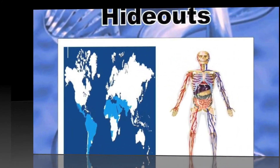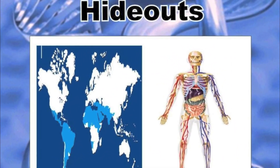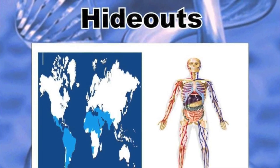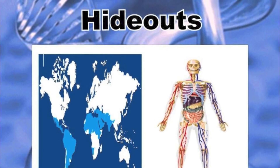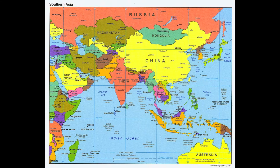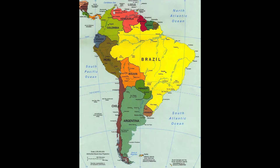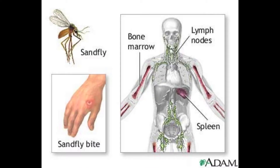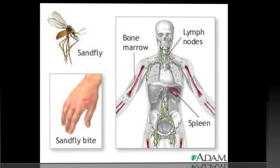Hideouts. In humans, visceral leishmaniasis mainly occurs in Africa, Asia, Latin America, the Middle East, and in the Mediterranean region. In the body, Leishmania donovani occurs mostly in the bone marrow, liver, and spleen.